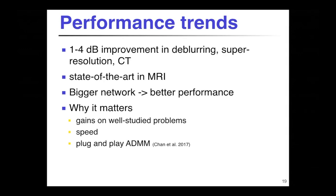Denoising is a special problem because inside other inverse problems you often have a denoising step. Inside ADMM if you're doing TV you soft-threshold gradients — you could think of that as denoising. There's a little bit of work on taking an off-the-shelf denoiser and throwing it inside ADMM to get an interesting regularizer. So if you have a good denoising CNN you might be able to deploy that for a wide variety of other problems, making denoising a good one to be studying.